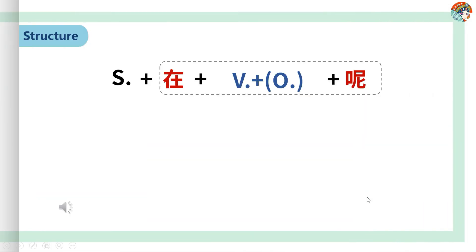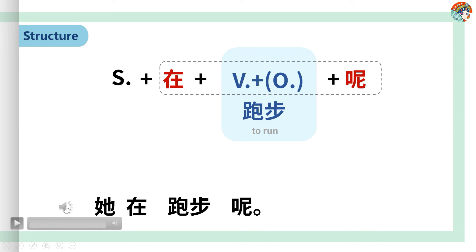The action is 跑步, which means to run. So how do you say she is running? Yes, the sentence is 他在跑步呢. Click the button, listen and repeat: 他在跑步呢.